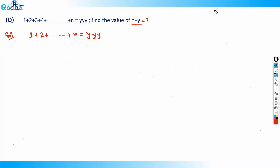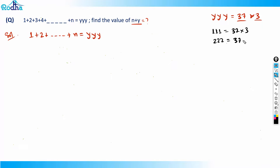First, you should understand the significance of triple y. Whenever we have something like triple y, it means all three digits are the same, and it is always a multiple of 37 and 3. For example, triple 1 equals 37×3, triple 2 equals 37×6, triple 3 equals 37×9, and so on.